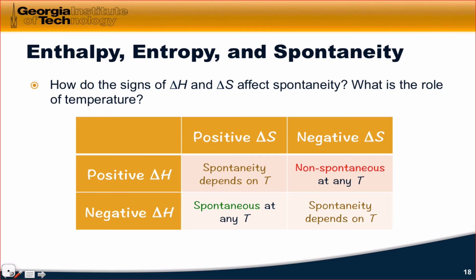Where things get interesting is when delta H is greater than zero and delta S is greater than zero as well. Now spontaneity depends on temperature, because even though delta H is greater than zero, the minus T delta S term may be negative enough to overwhelm the positive enthalpy change. Since delta S is fixed, the way to influence this is to change the temperature. At higher temperatures, we get delta G less than zero, since the negative term in the delta G expression becomes overwhelming.